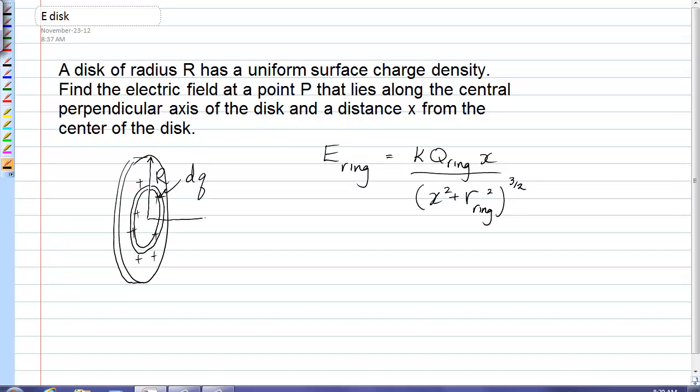The distance from the center of the disk where we want the field, x, is the same x that's in the ring formula, and we want the field out here, and we know that the field is just a little bit of field now from that ring, because it's just a little ring.